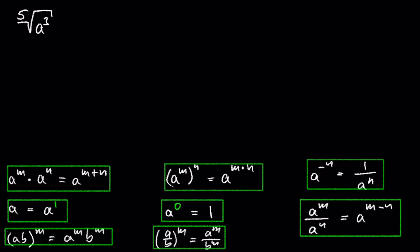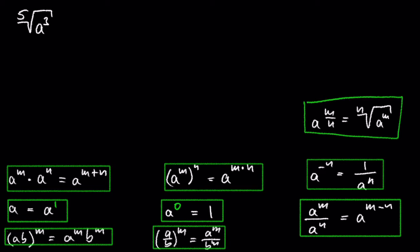How can we write the fifth root of a cubed as an exponent? That's simple — just use the rule that any non-zero number raised to m over n is the same as the nth root of a to the power of m. So we get a raised to 3 over 5.